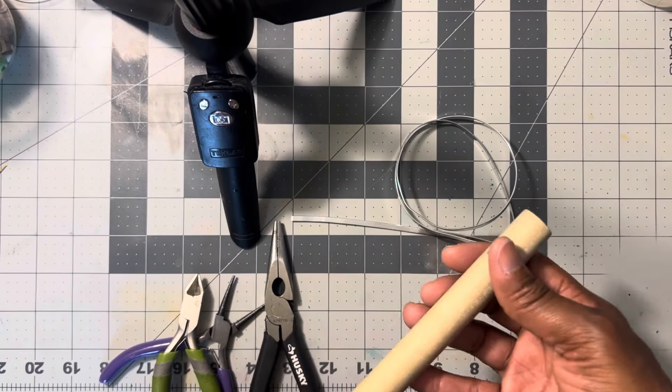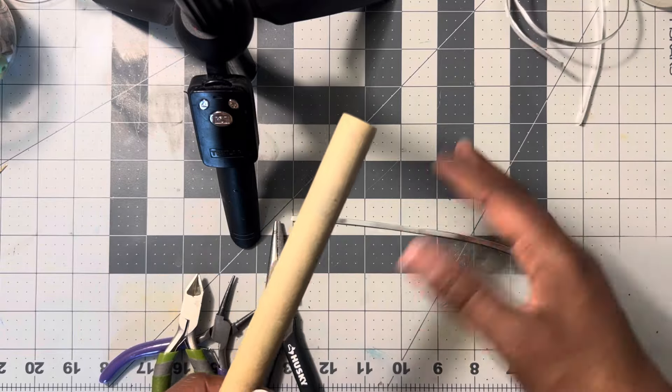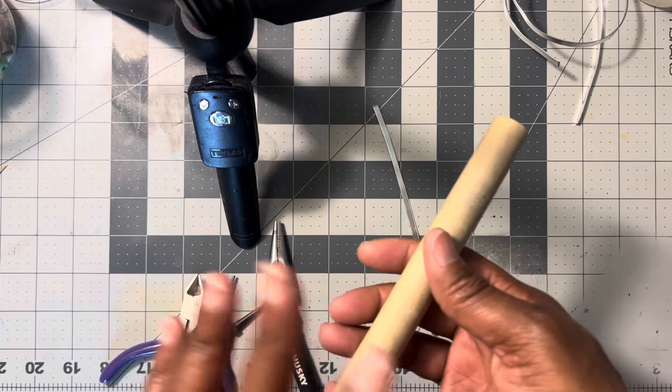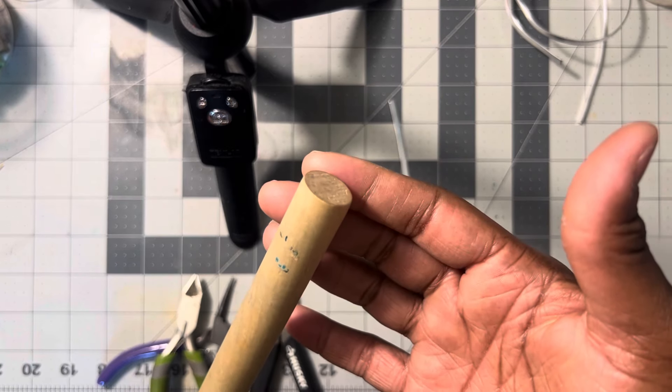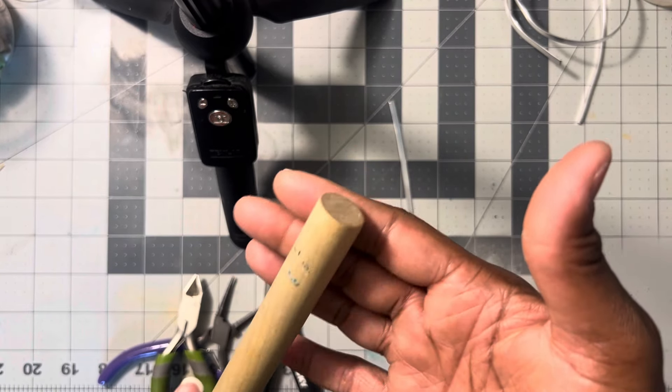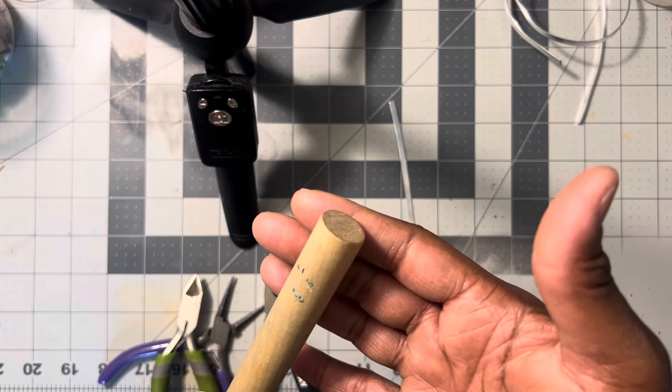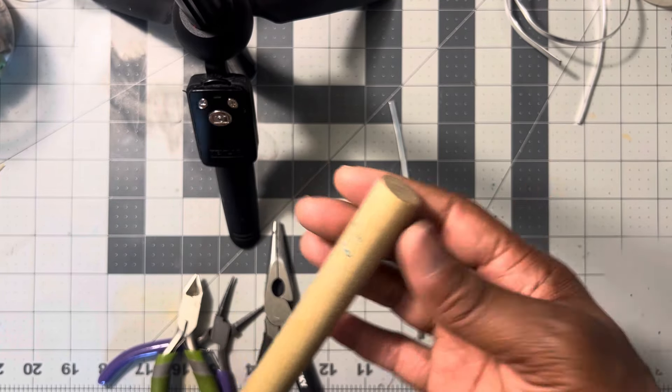Or you can use a ring mandrel, but like I said, this is going to be an adjustable ring. So it's completely up to you whichever you choose. But this dowel I purchased from Walmart, and this dowel is a half of an inch thick. Okay. So it's not an inch. It's a half of an inch thick.